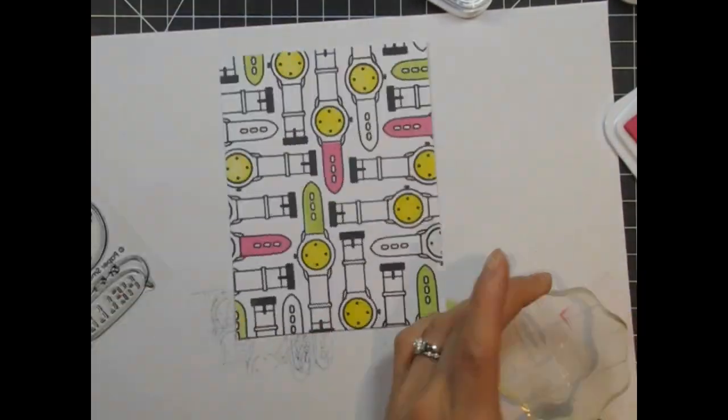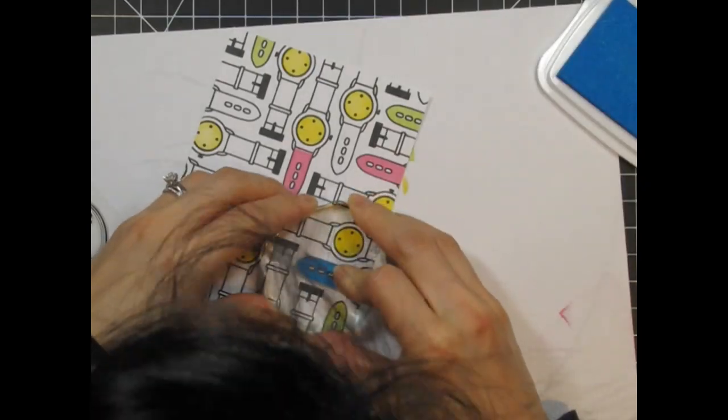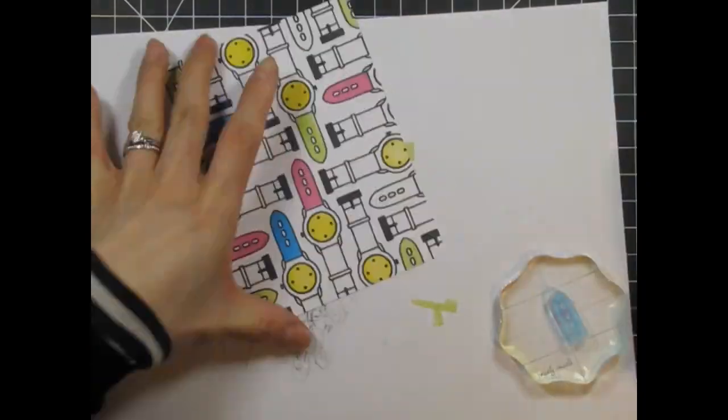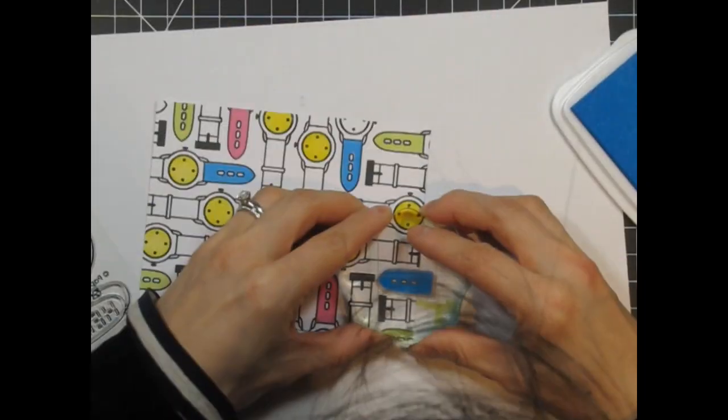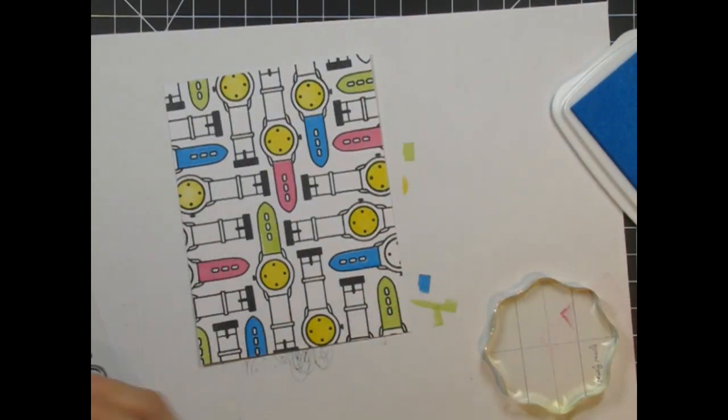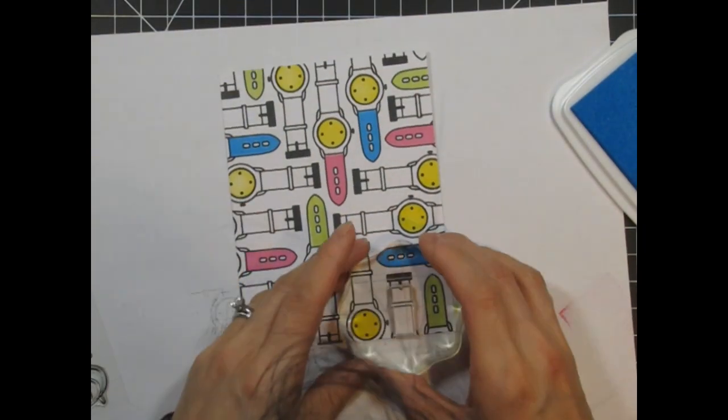Do you remember the Swatch brand of wristwatches? I owned a few of them when I was a teenager, and stamping these colorful watches reminded me of them. I loved all the different clock faces and wristband designs. It was fun to mix and match to create my own unique watch.